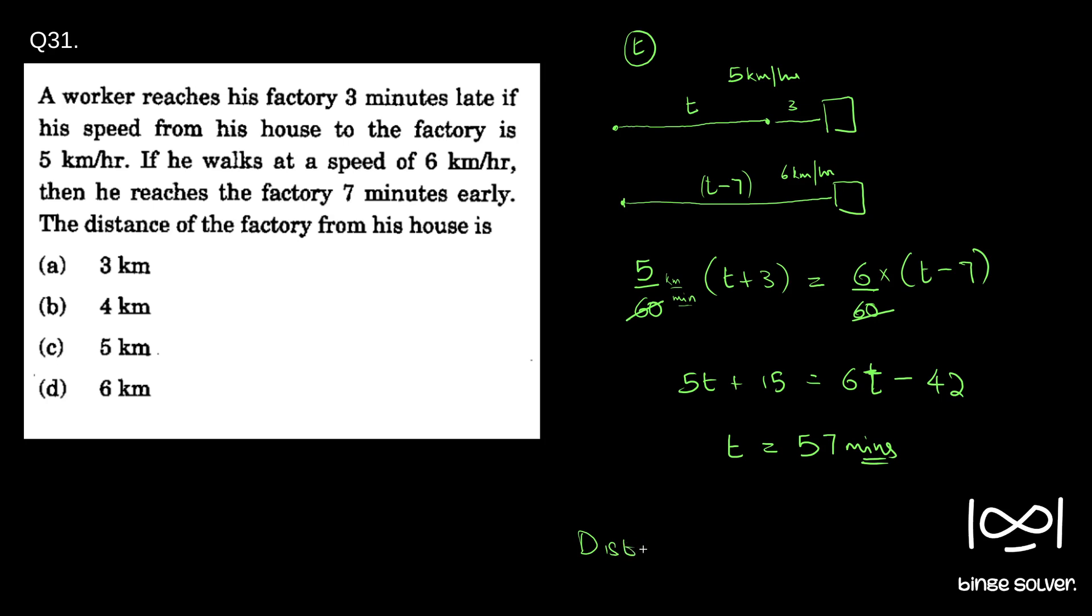Now to find the total distance, we can write distance is equal to 5 kilometers, 5 by 60 into the time taken t plus 3, which is 57 plus 3. 60 by 60 is 1, so 5 kilometers. This is the answer.